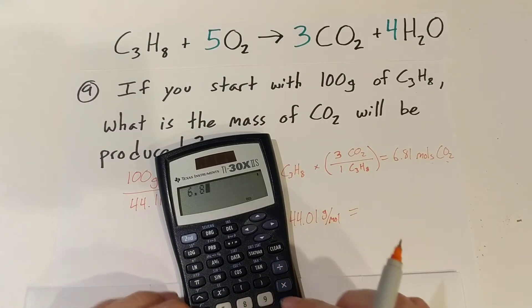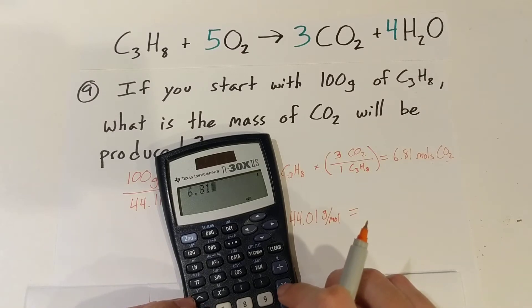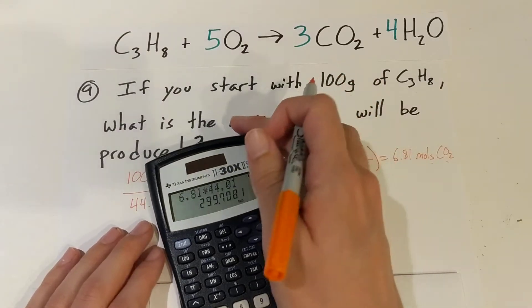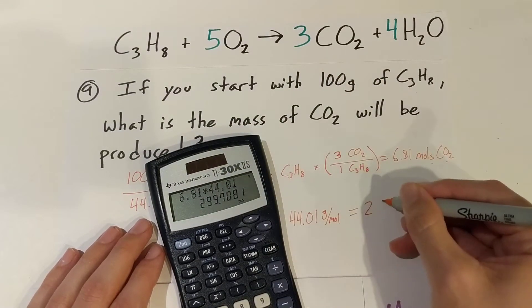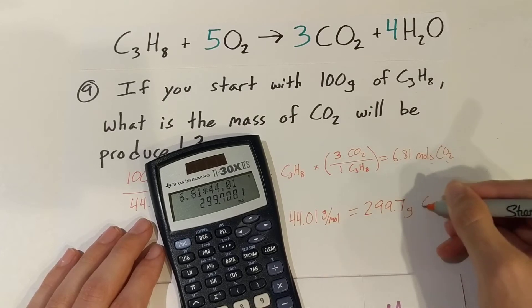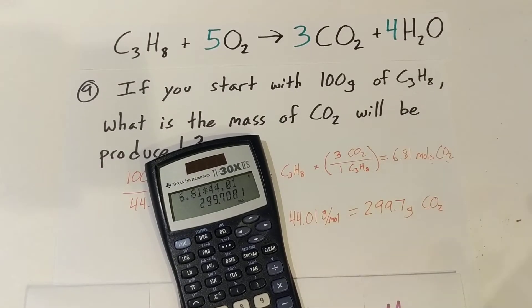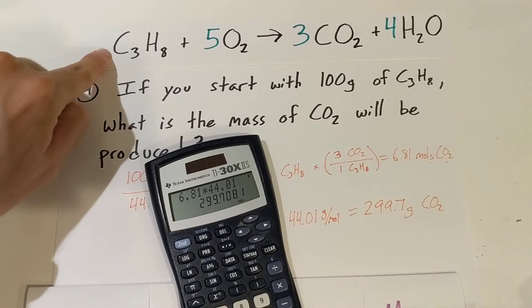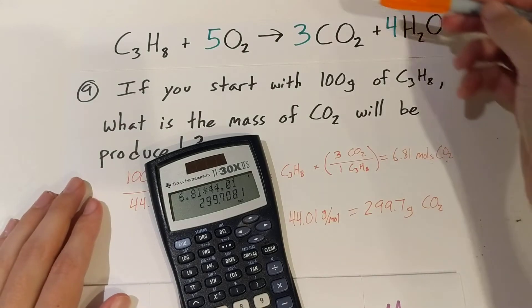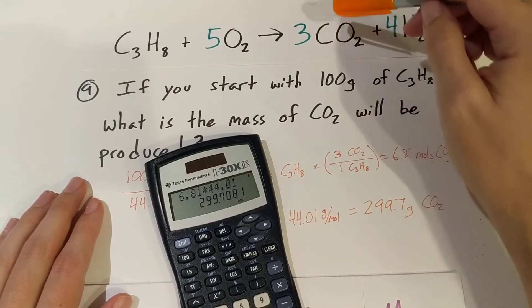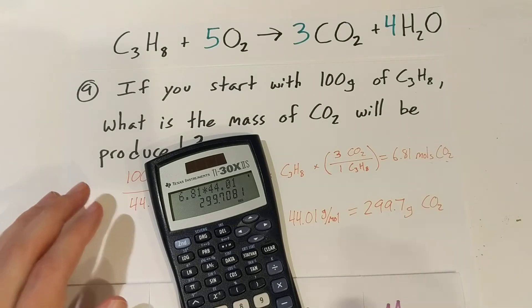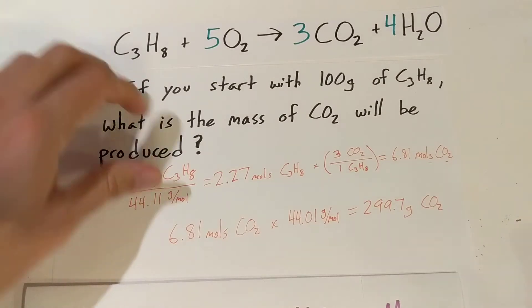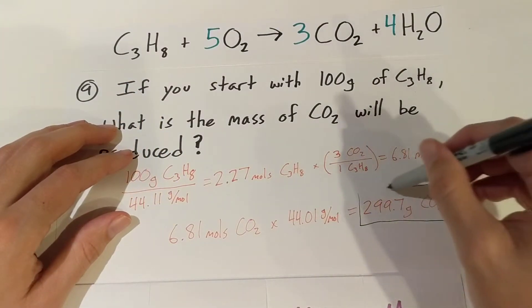6.81 times 44.01 — our answer is going to be about 299.7 grams of carbon dioxide. What that means is that whenever you burn 100 grams of propane, you get 299.7 grams of carbon dioxide. All right, got that one done — made it all the way to mass.